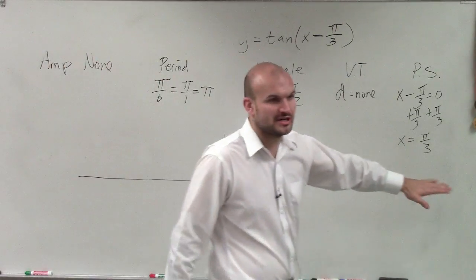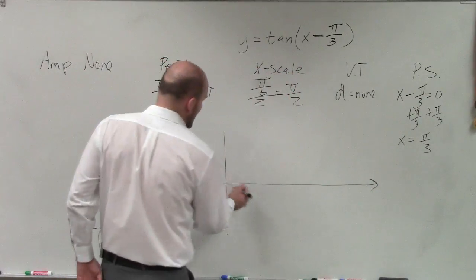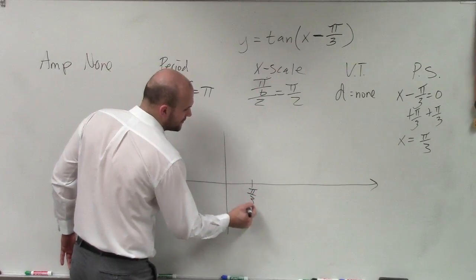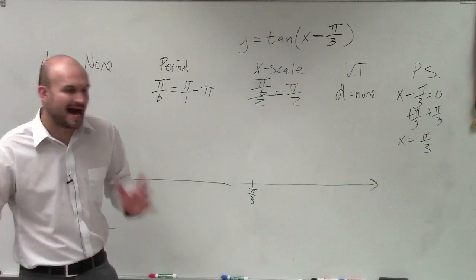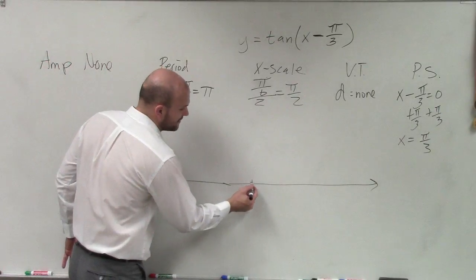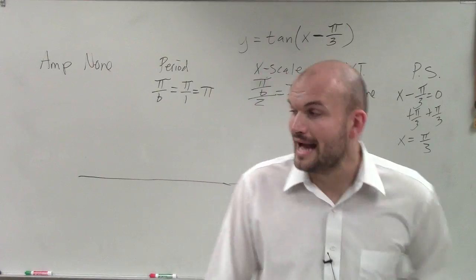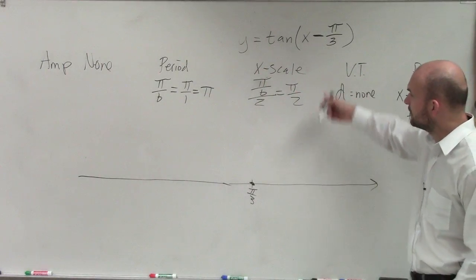But remember when we're looking at a phase shift, that's where we can start the graph. So instead of starting at 0, what I'm now going to do is start at π over 3. Actually I don't know where 0 is, but I'm going to start at π over 3. I know that for the tangent graph is going to be my first x-intercept. Now the next thing I'm going to do is if that's π over 3, what is my scale?